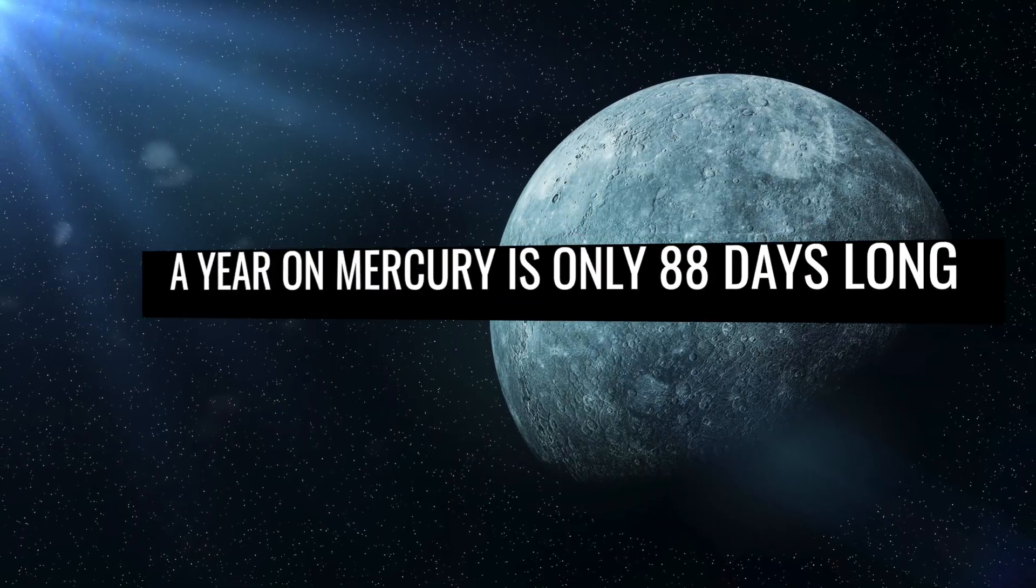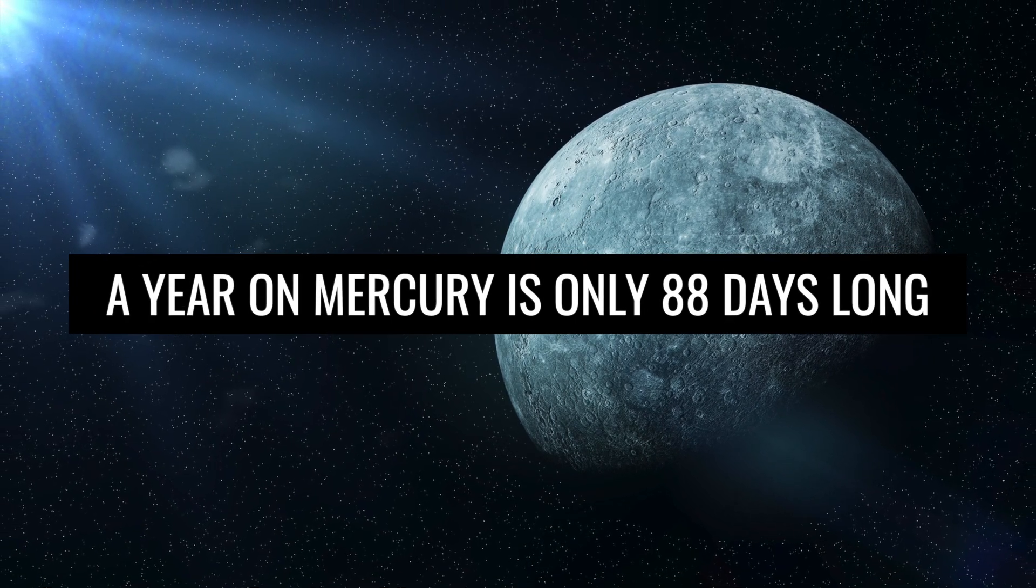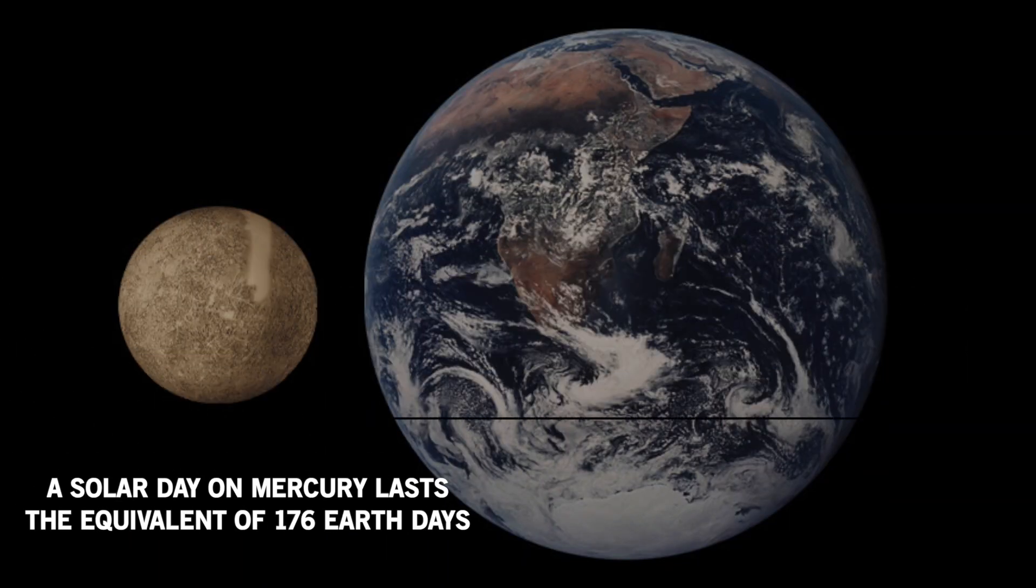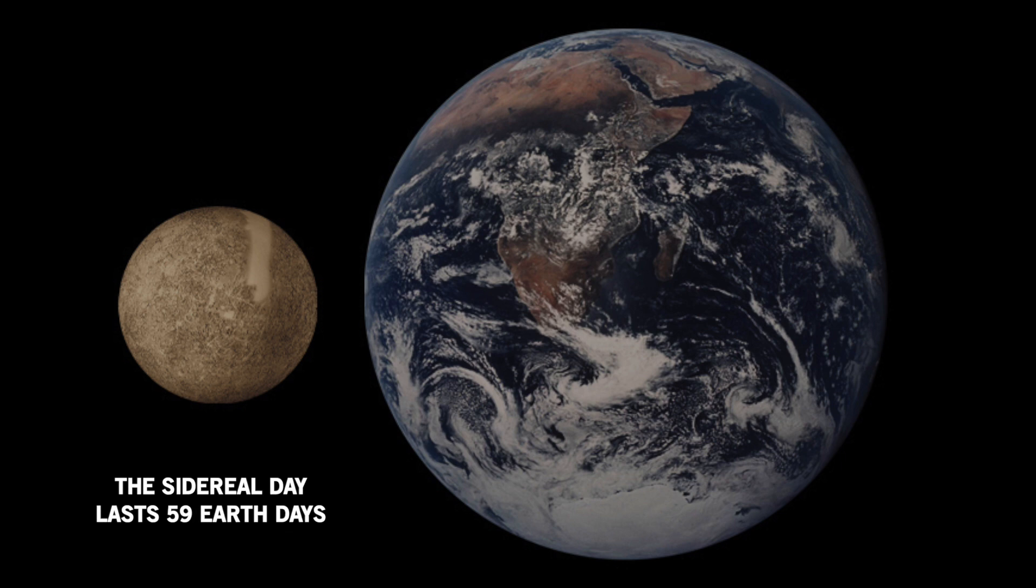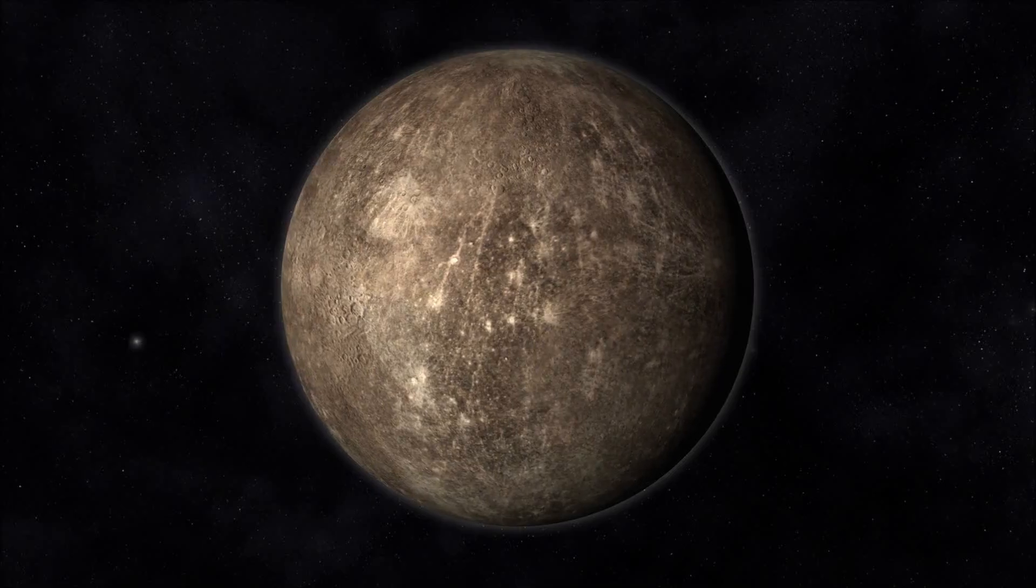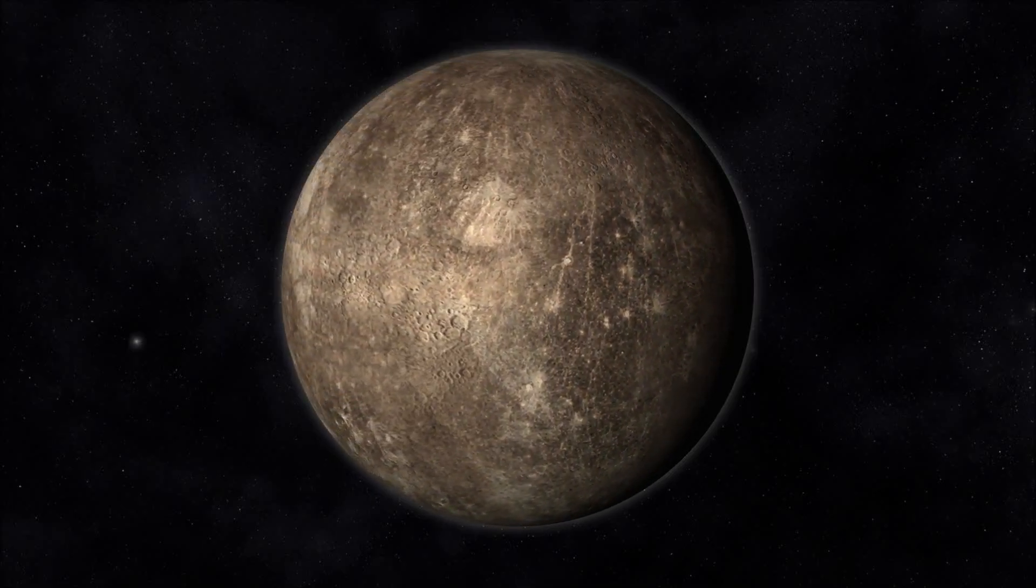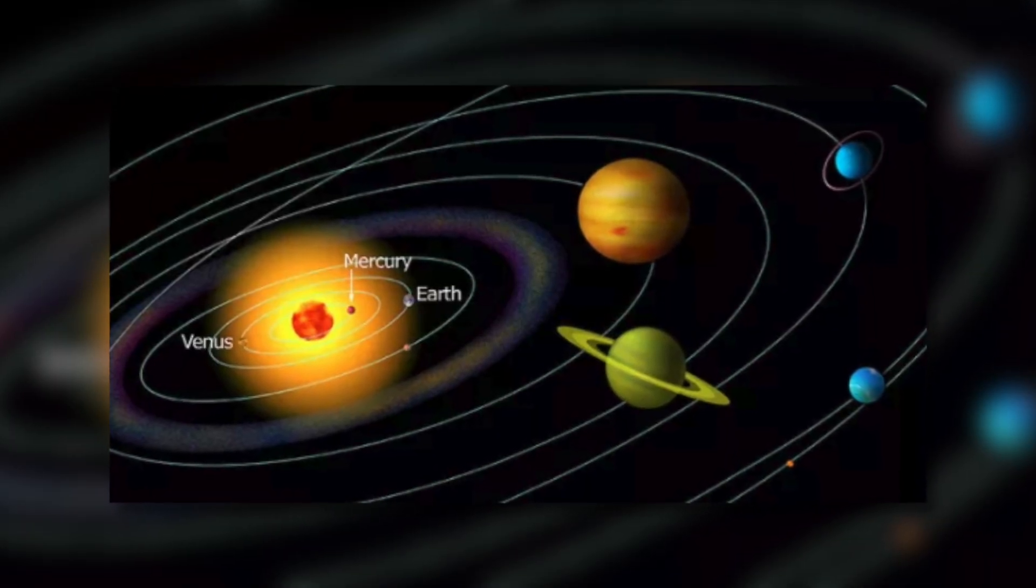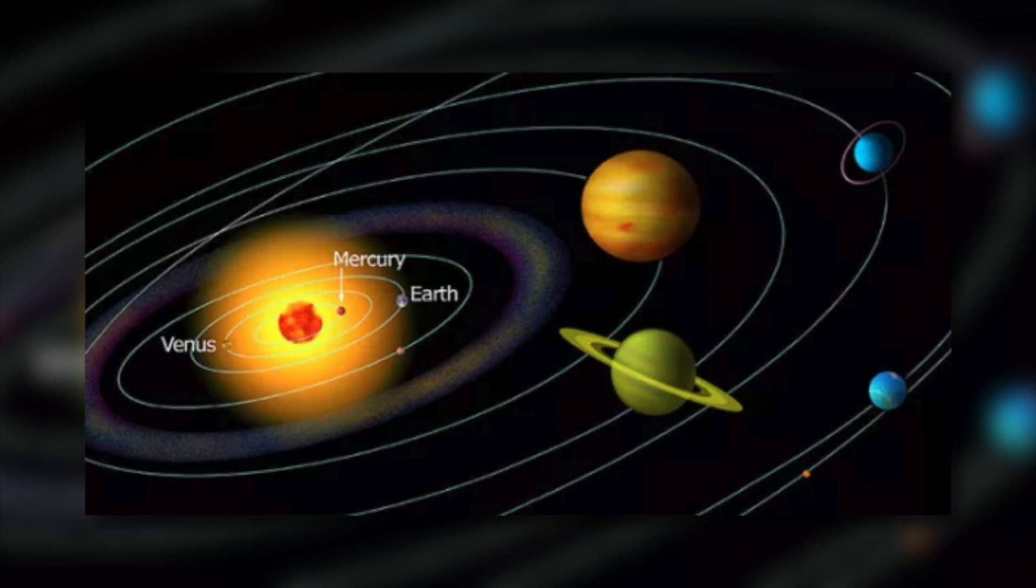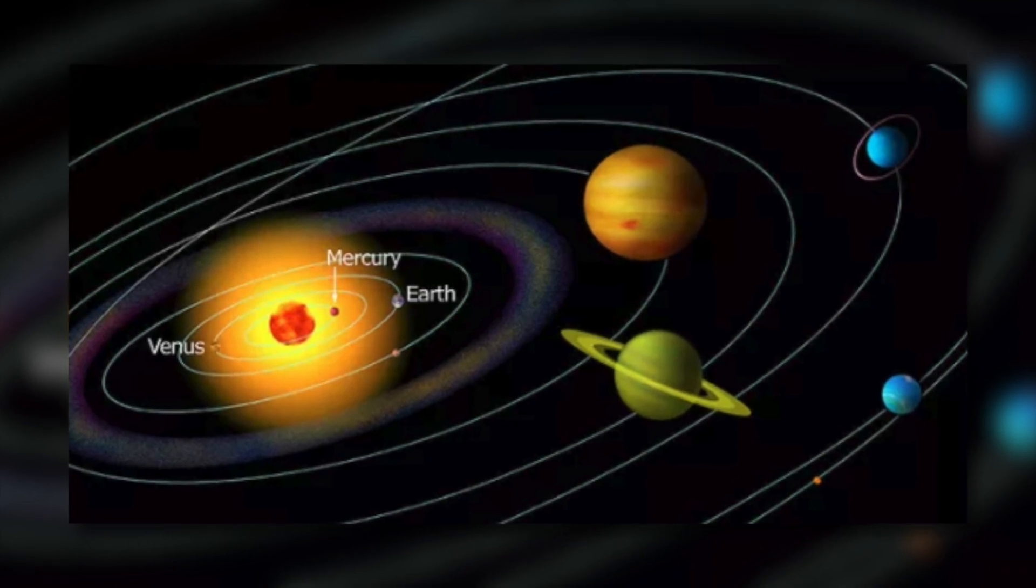A year on Mercury is only 88 days long. One solar day on Mercury lasts the equivalent of 176 Earth days, while the sidereal day, or the time for one revolution relative to a fixed point, lasts 59 Earth days. Over time, this has slowed down the rotation of the planet. Mercury also has the highest orbital eccentricity of all the planets at a distance of 46 to 70 million kilometers from the Sun.